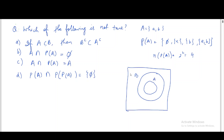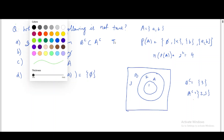With A inside B, assign values: say 1 is in A, 2 is in B but not A, and 3 is outside both. B complement is {3}, and A complement is {2, 3}. So B complement is indeed a subset of A complement — option (a) is true, not the answer we need.